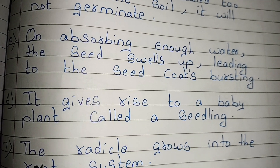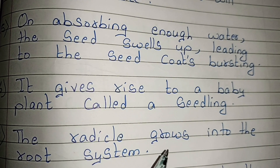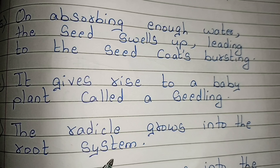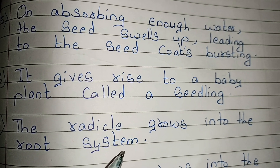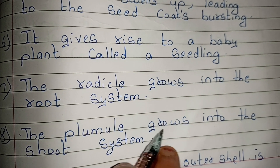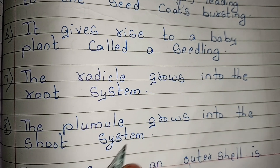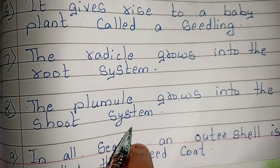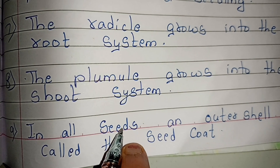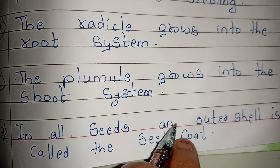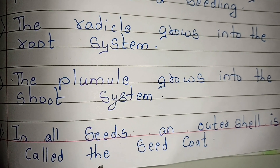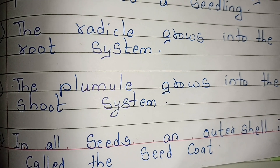The radicle grows into the root system. The plumule grows into the shoot system. In all seeds, the outer shell is called the seed coat.